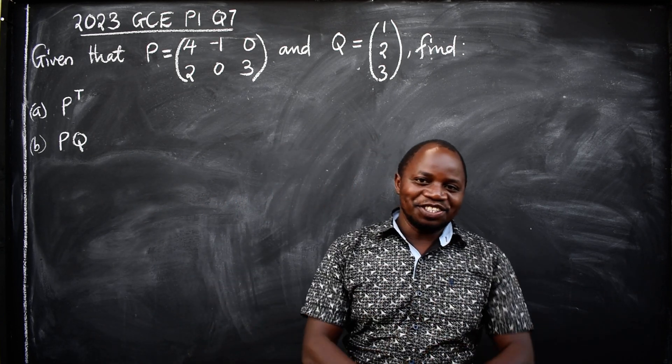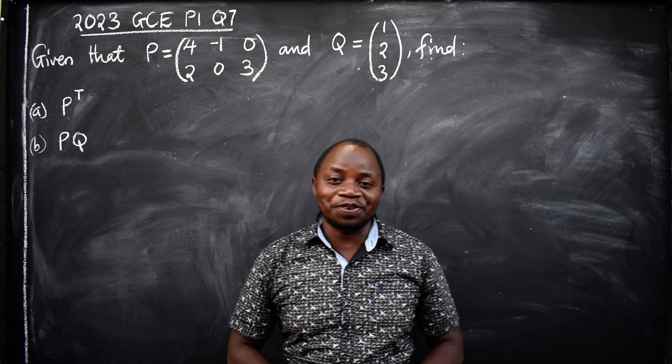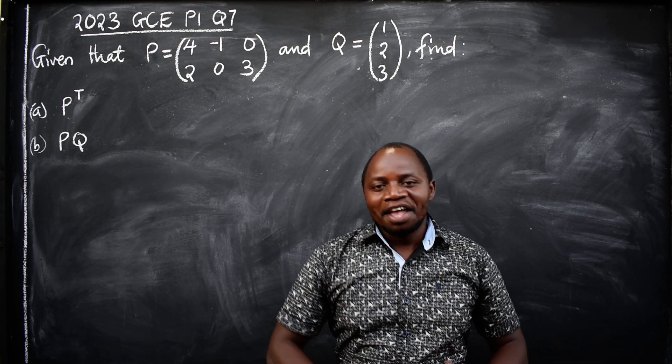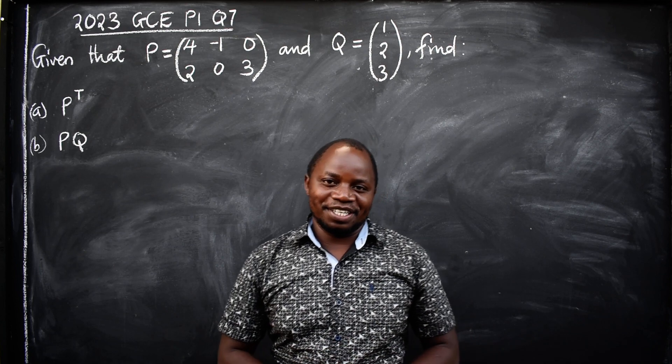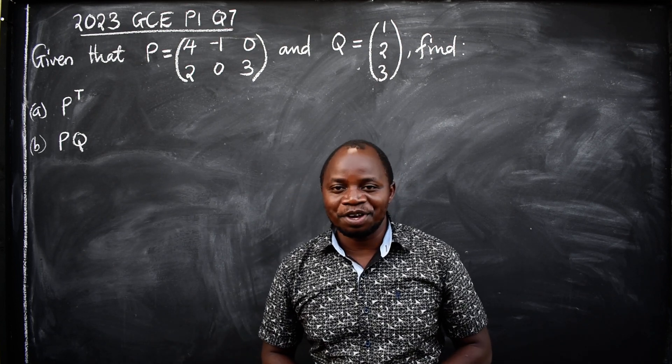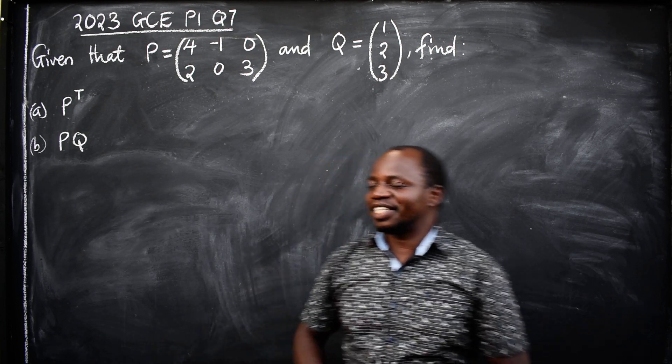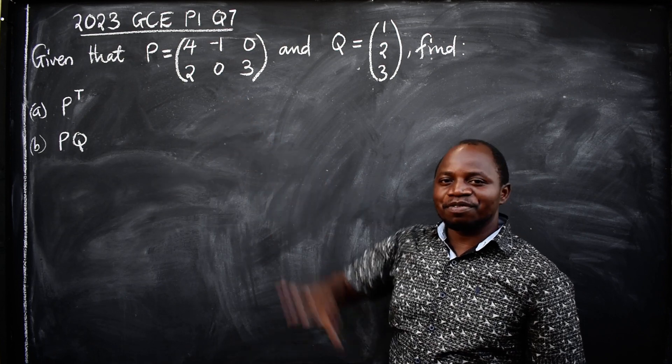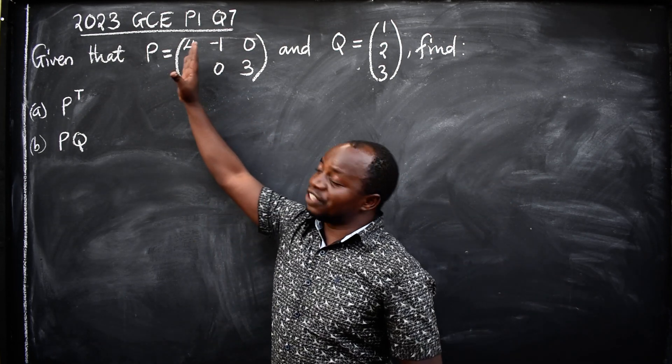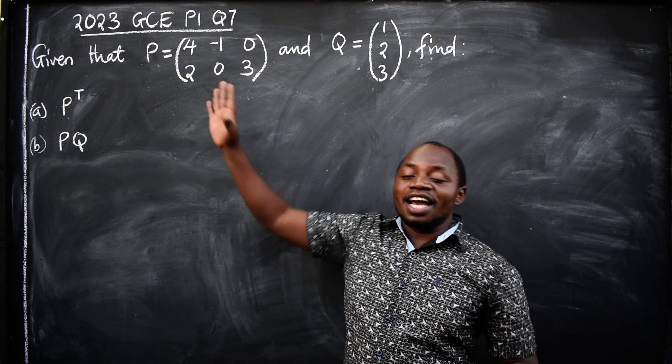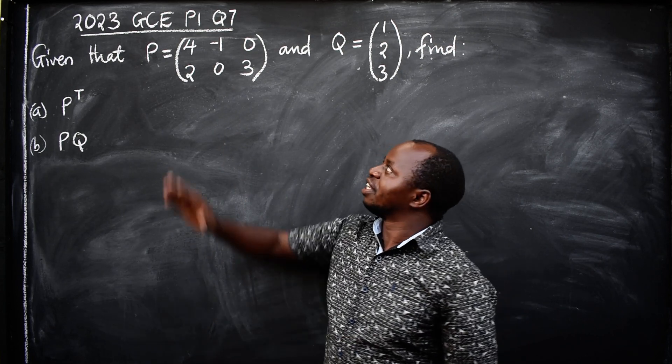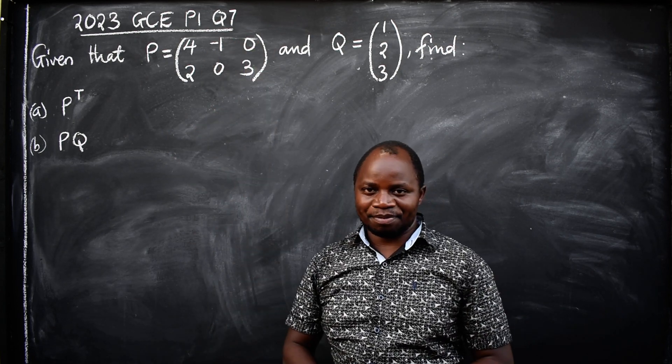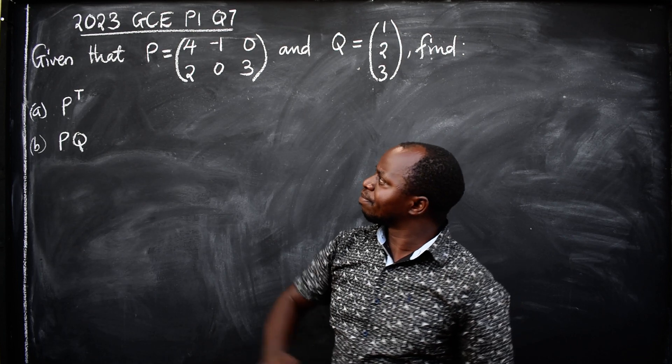Greetings ladies and gentlemen, hope you are doing perfectly well. This is mathematics and in this video we want to look at this question coming from 2023 GCE paper one, question number seven. The question reads: given that P equals (4 -1; 0 3) and Q equals (1; 2; 3), find part A, P transpose, and part B, PQ.